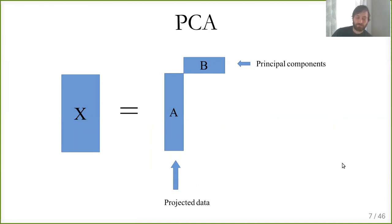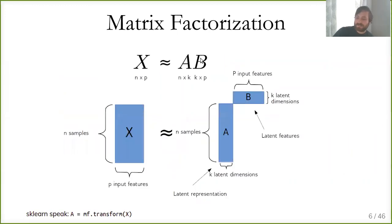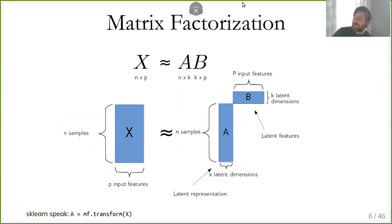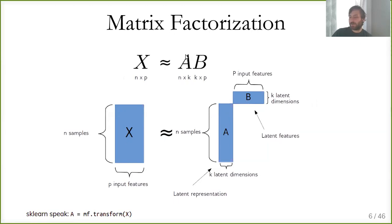Even though everything here is linear, this doesn't mean there's a simple linear function from X to A or from X to B, because these matrices are usually not invertible. There's no closed-form solution in general, and for some models it can be quite tricky depending on the requirements for A and B. In PCA, we require the entries of B to be orthogonal, and we find A by minimizing squared error.